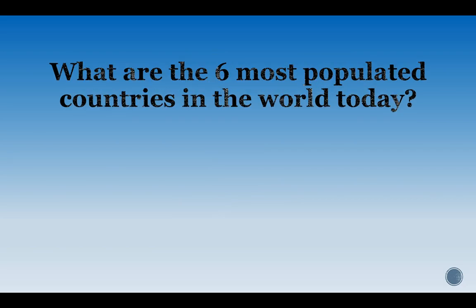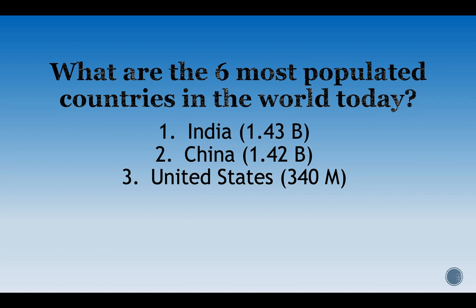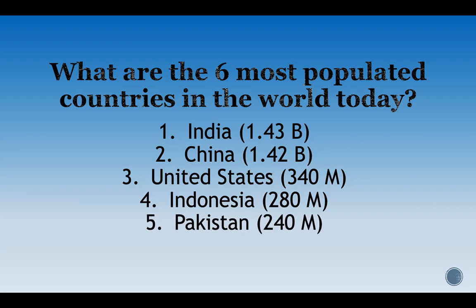Last question: what are the six most populated countries in the world today? Number one is actually India — it recently surpassed China. China was the most populated country for a very long time, and India recently surpassed it, so second is China. Both have about 1.4 billion people. A distant third is the United States with 340 million. Indonesia with 280 million, Pakistan with 240 million — by the way, Pakistan used to be part of India. And sixth is Nigeria with 230 million, one of the fastest growing countries in the world, and some think it might surpass the United States by 2050.